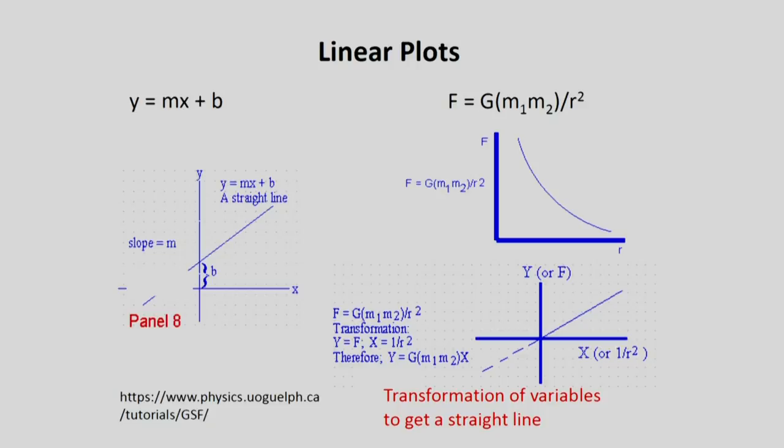In such cases, it might be nice to actually plot F versus 1 upon r squared. Transform your data r into 1 upon r squared. And then, if you get a straight line, you can see right away that there is a correlation. In fact, that F is linearly dependent on 1 upon r squared.